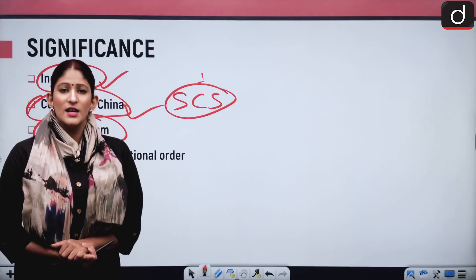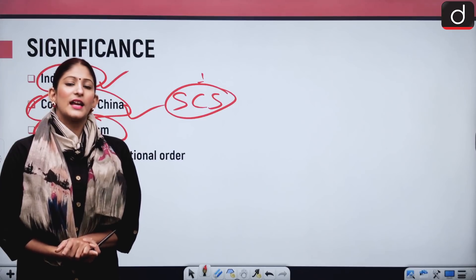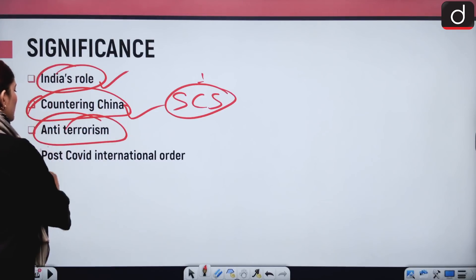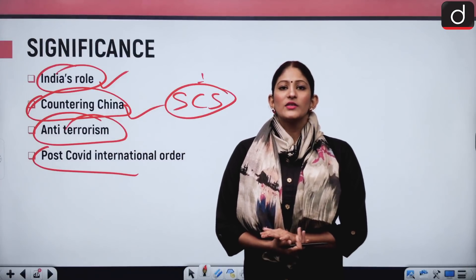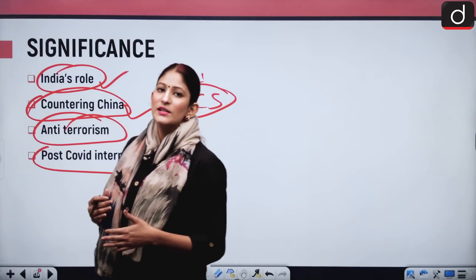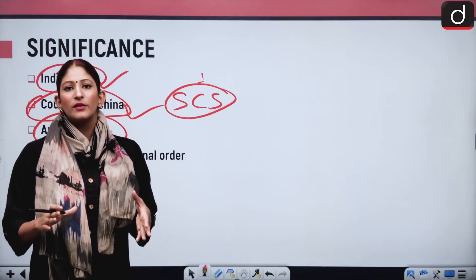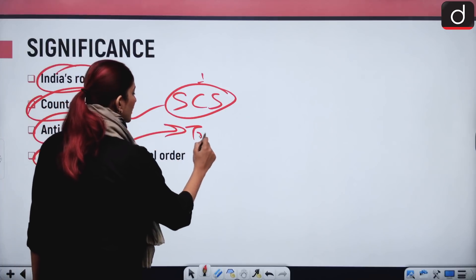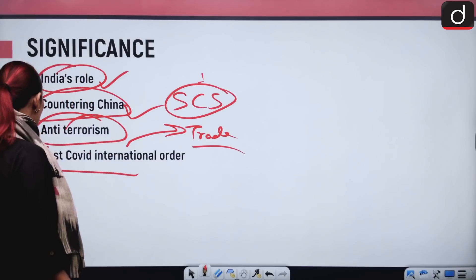Anti-terrorism is another significant area, as many terrorist outfits have been emboldened by the Taliban's capture of power in Afghanistan. Terrorism needs to be looked at from the perspective of these big economies and groupings. The post-COVID international order also needs to be discussed, because as COVID passes, most countries will try to get back to normal in a much more robust sense — the wheels of their economies will need to move at a fast pace to make up for losses caused by COVID, requiring enhanced trade and commerce both domestically and internationally.